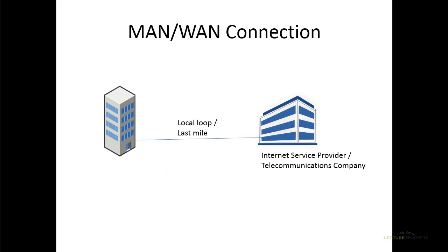Let's look at what's on the outside of our building. Between our office and the internet service provider or telecommunications company, that connection is often called the local loop or the last mile. That refers to the line they have provided for you from their company to your building. That could also be wireless because of WiMAX capabilities. Typically it's going to be wired — and today it's typically fiber optic wires — but it's the connection between your third party company and your office itself.